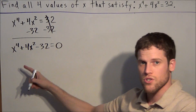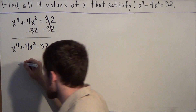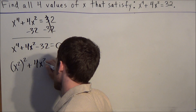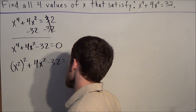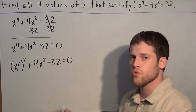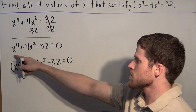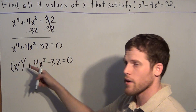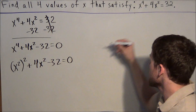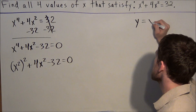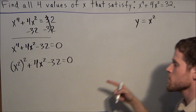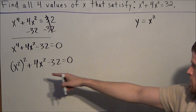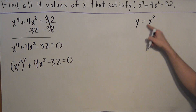Now before we make a substitution, I want to rewrite this equation as x squared squared plus 4x squared minus 32 equals zero. Because we want to treat this like a quadratic equation, but the only difference is we have x to the fourth power here and x squared as our middle term. So if we write x to the fourth as x squared squared, we could replace x squared with the variable y. We're going to let y equal x squared.